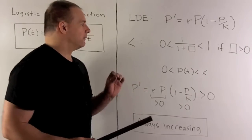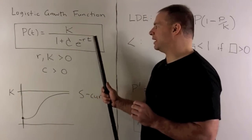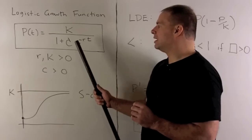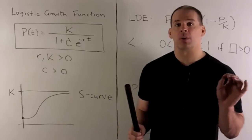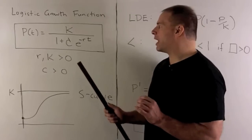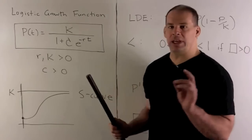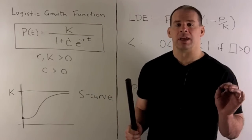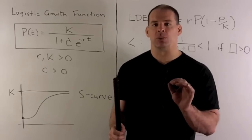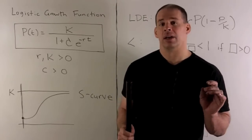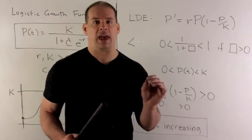Now, if I take one over one plus C times e to the minus rt, since C is positive and e to anything is always positive, I have one over one plus a positive number, so that's between zero and one. If we multiply through by K, what comes out is going to be between zero and K. So our function is always between zero and K.